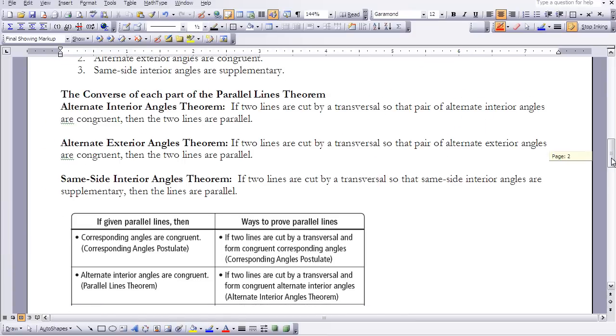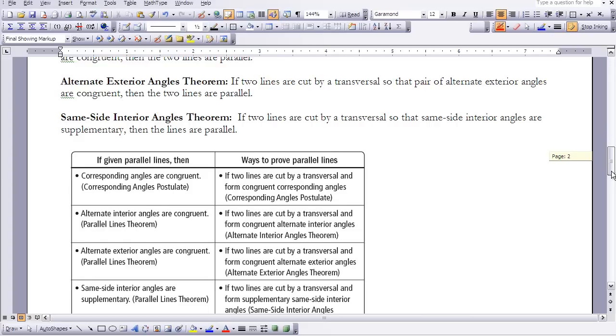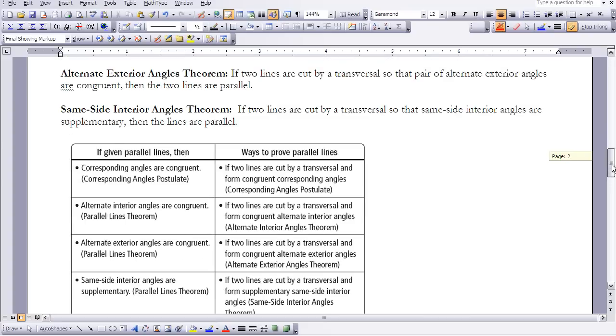As with corresponding angles, we proved that they were equal if the lines were parallel, or if the lines were parallel, they were equal. We're going to do the same thing with these other types of angles that we identified above.